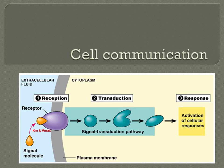Cells communicate by sending and receiving signals. Signals may come from the environment, or they can come from other cells. The basics behind cell communication, as well as the different ways that this cell communication can occur, as shown in the image below, will be the emphasis of this video.